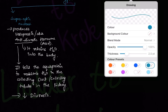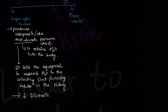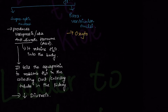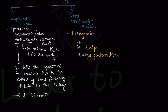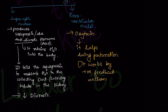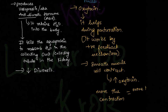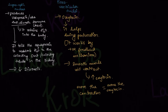The second nucleus is the paraventricular nucleus, which produces the second hormone — oxytocin, also known as the love hormone. Oxytocin helps during parturition by working through a positive feedback mechanism: smooth muscles in the uterus contract, signaling the hypothalamus to produce more oxytocin, so more contraction leads to more oxytocin.